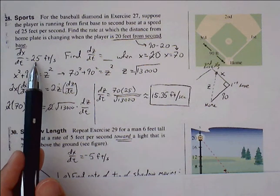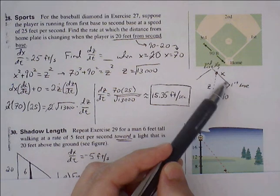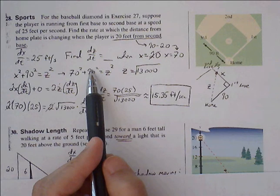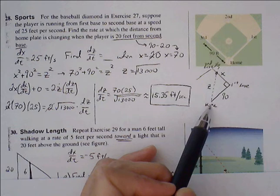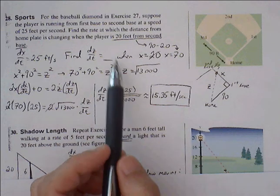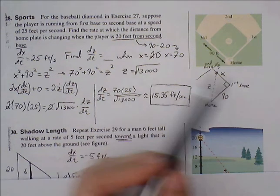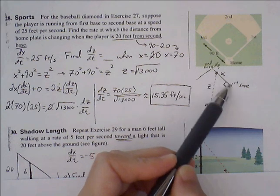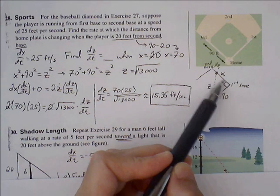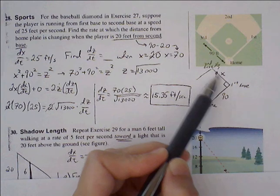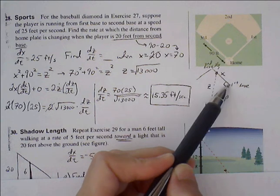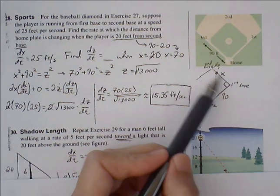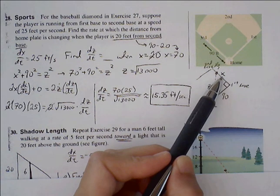The player is running at 25 feet per second, so dx/dt equals 25 feet per second, and we're trying to find dz/dt. At the moment when the player is 20 feet from second base, note that 20 is the distance from second base, not x. Since the distance between first and second base is 90 feet, if you're 20 feet from second base, you are 70 feet from first base. So x equals 70 at this moment.